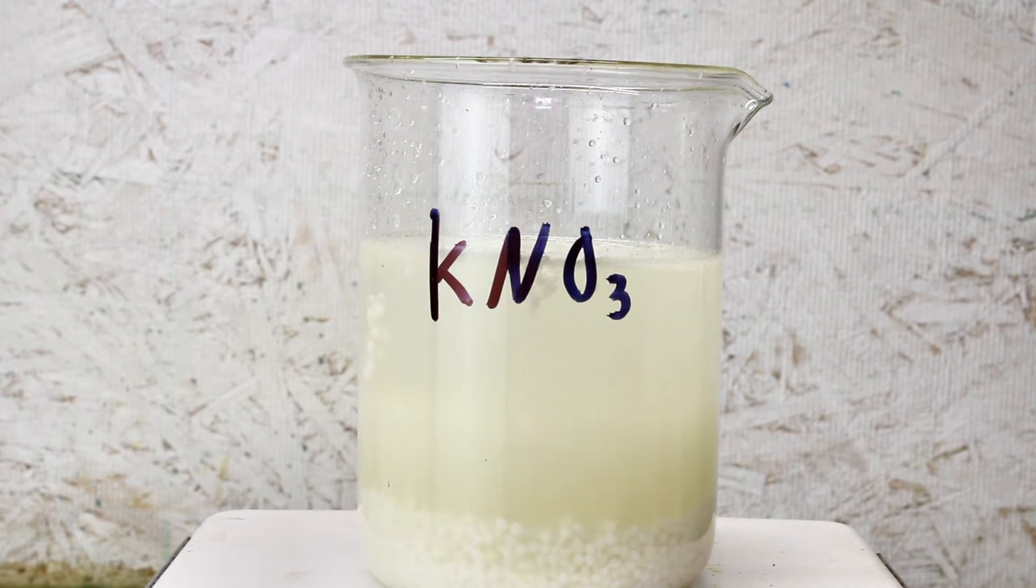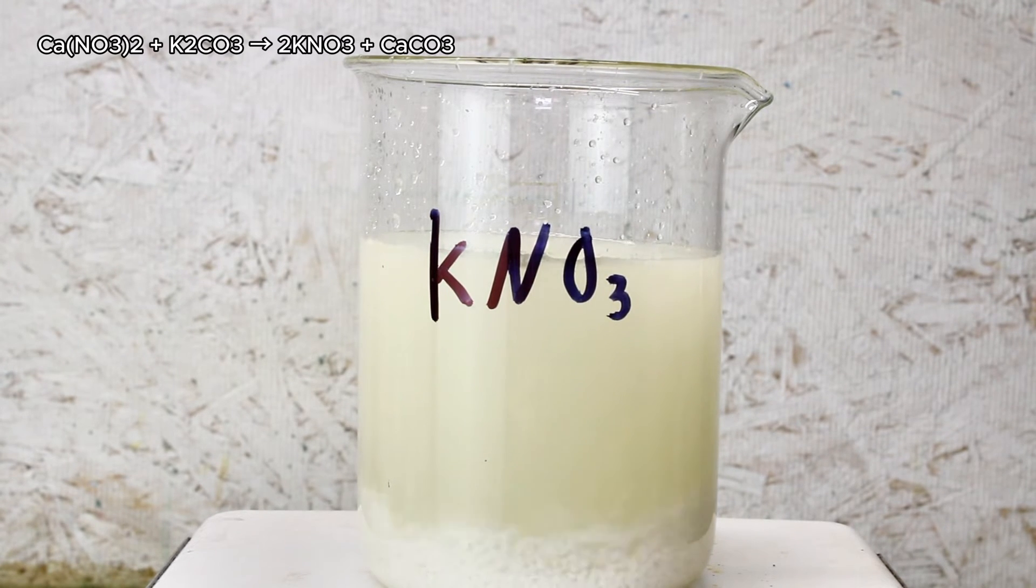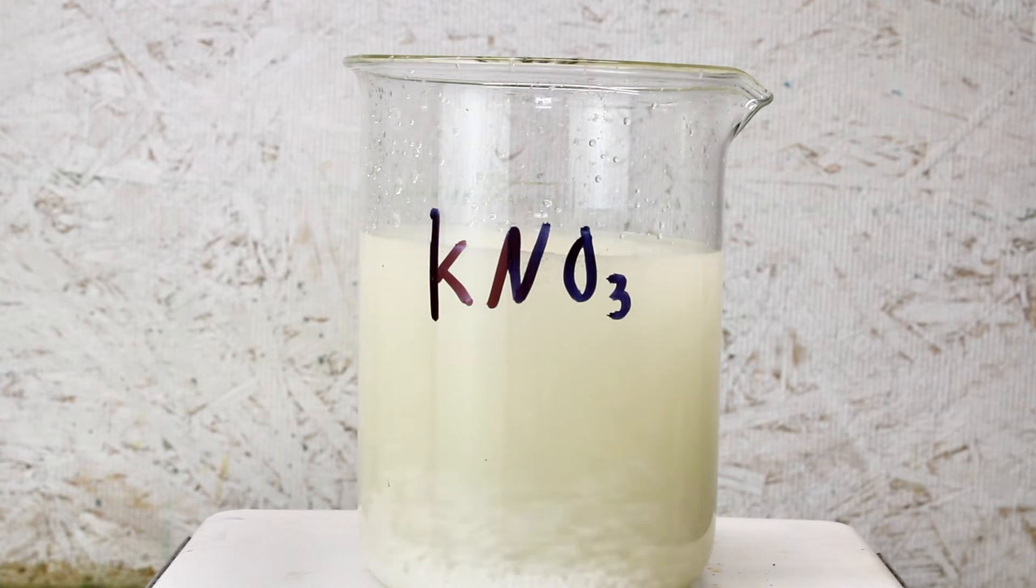To that end, I'm going to show you how to make potassium nitrate by reacting calcium nitrate fertilizer with potassium carbonate. To do this, I first need to dissolve molar equivalents of both in minimal volumes of water.